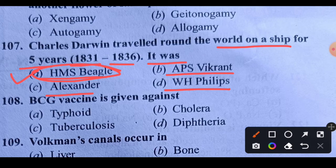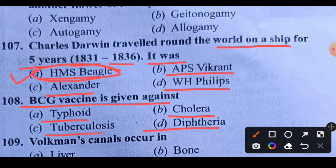Question 108: BCG vaccine is given against which disease? Options: typhoid, cholera, tuberculosis, or diphtheria. BCG vaccine is given for tuberculosis, which we call TB in short.